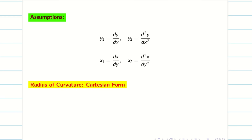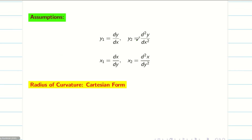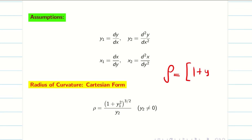Now we are going to write the formula for radius of curvature in the Cartesian form, which consists of x and y. The notation we are going to use is rho. Remember, radius of curvature is always positive — we can never write any negative values. The formula for radius of curvature is: rho equals (1 plus y1 squared) to the power 3 by 2, divided by y2.